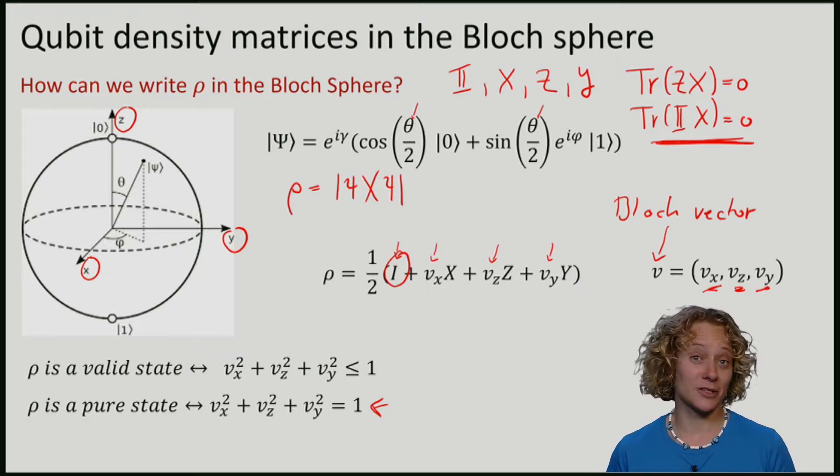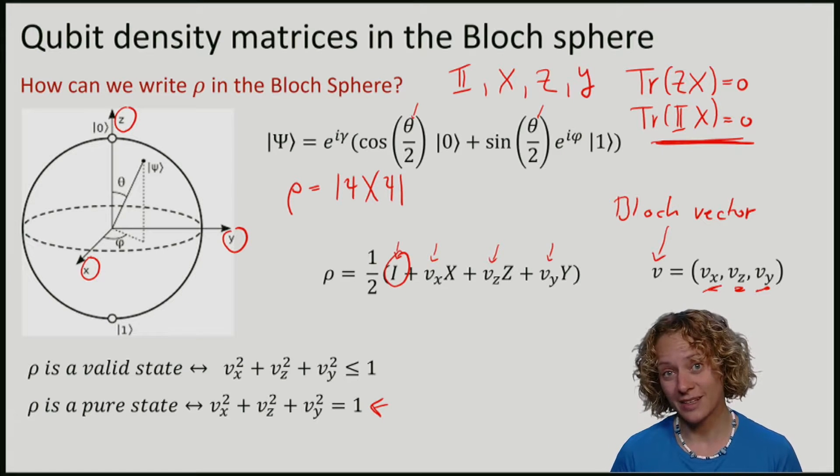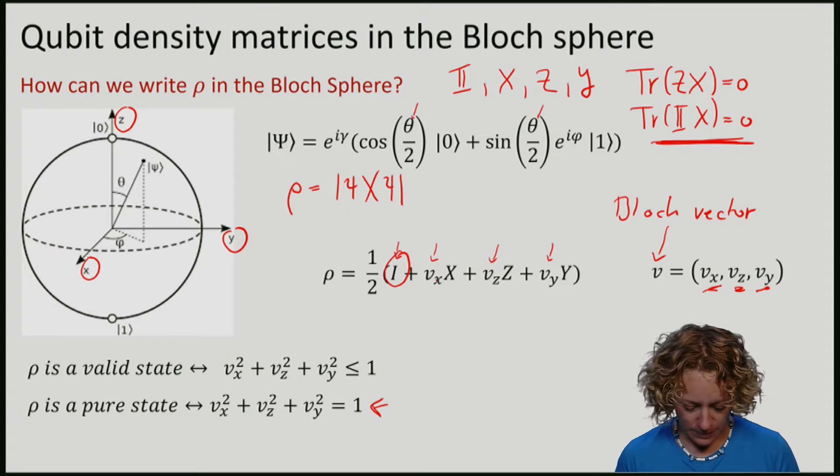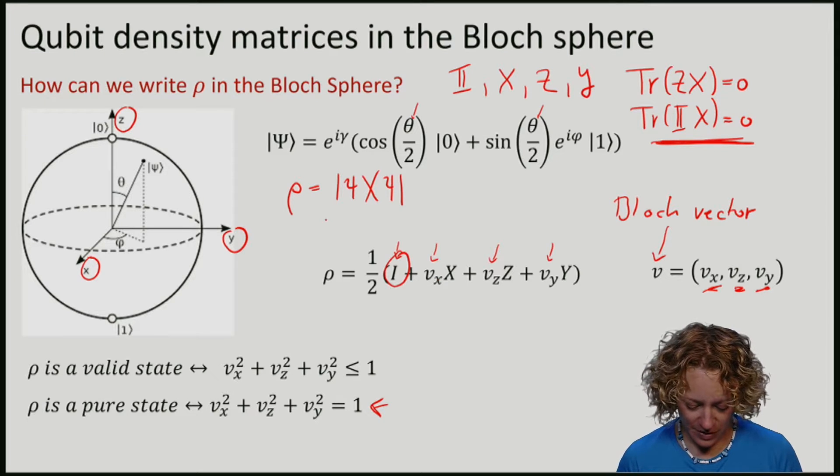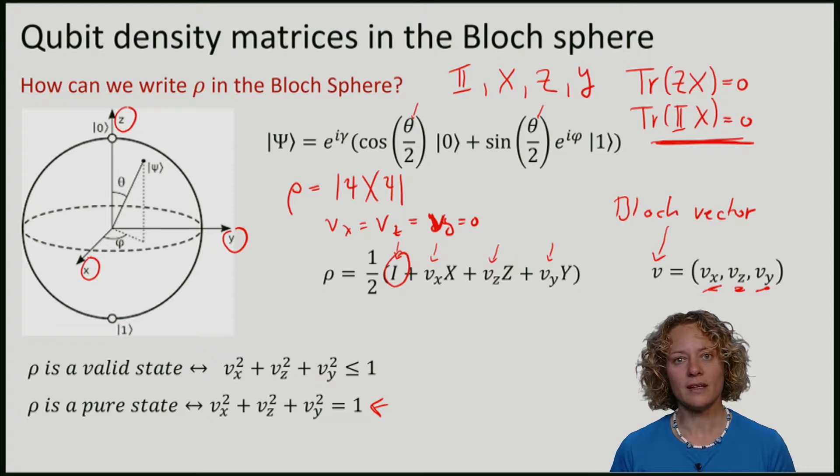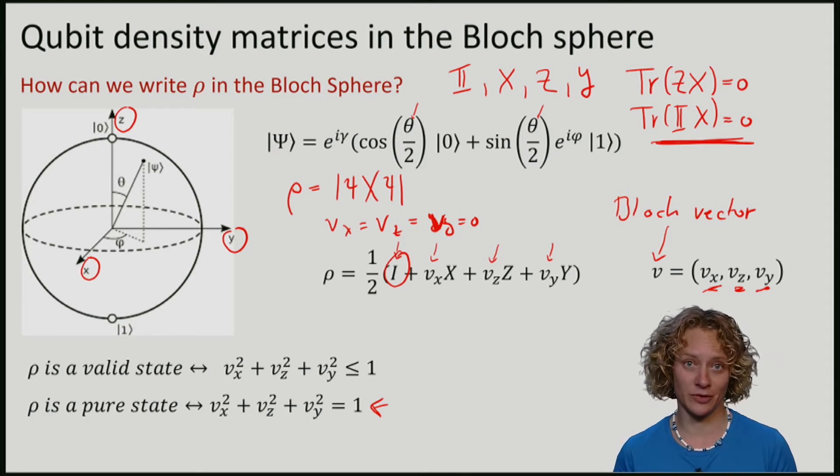A mixed state, such as, for example, the maximally mixed state, where all of the numbers are zero, so the maximally mixed state lives in the inside of the Bloch sphere.